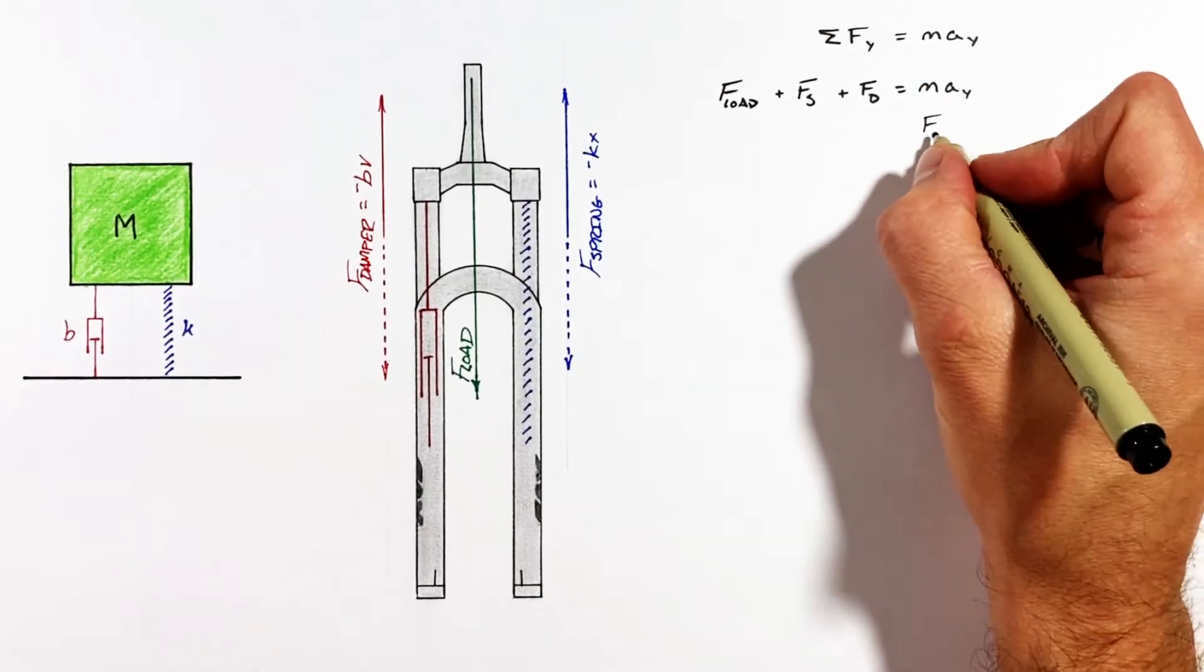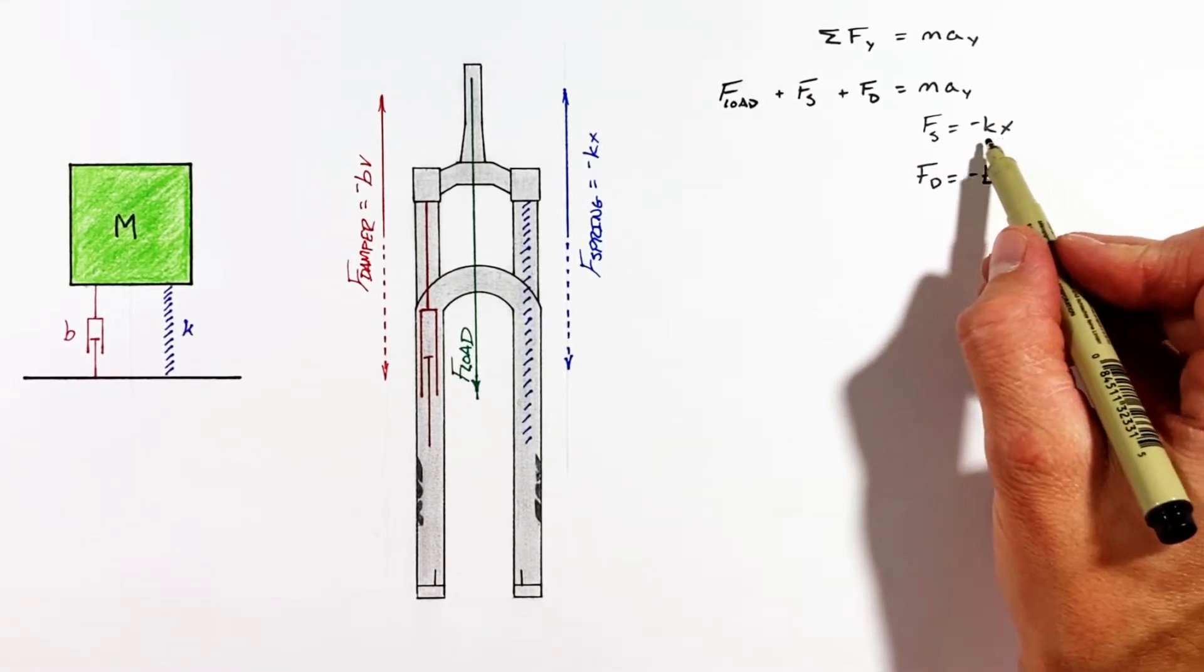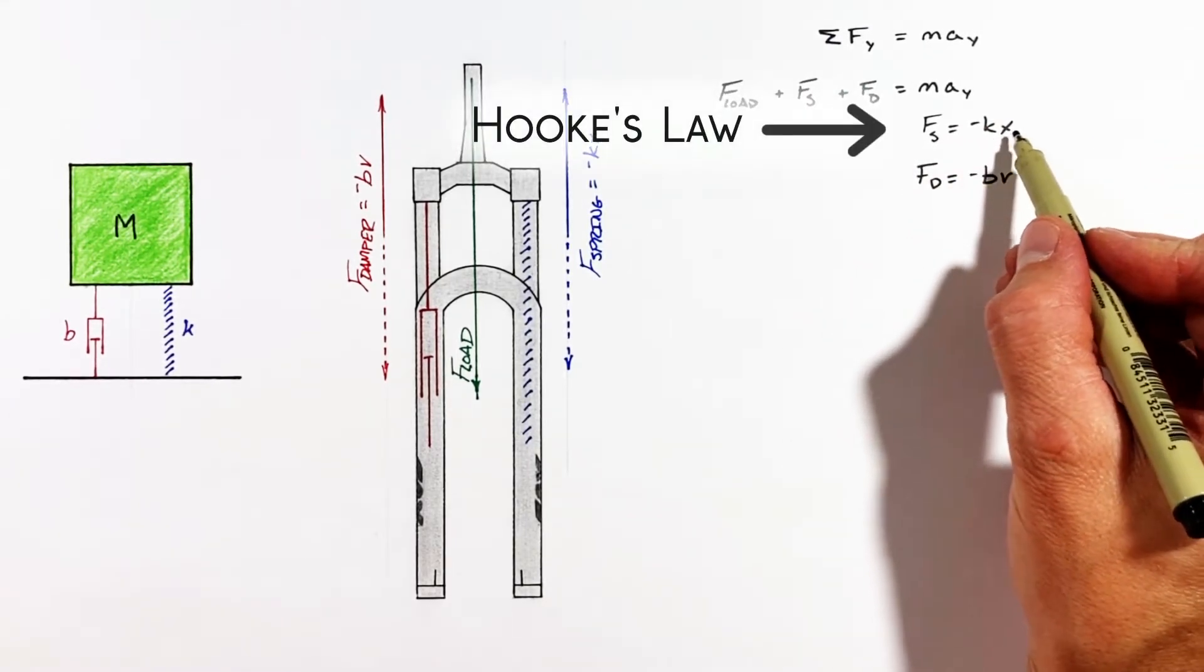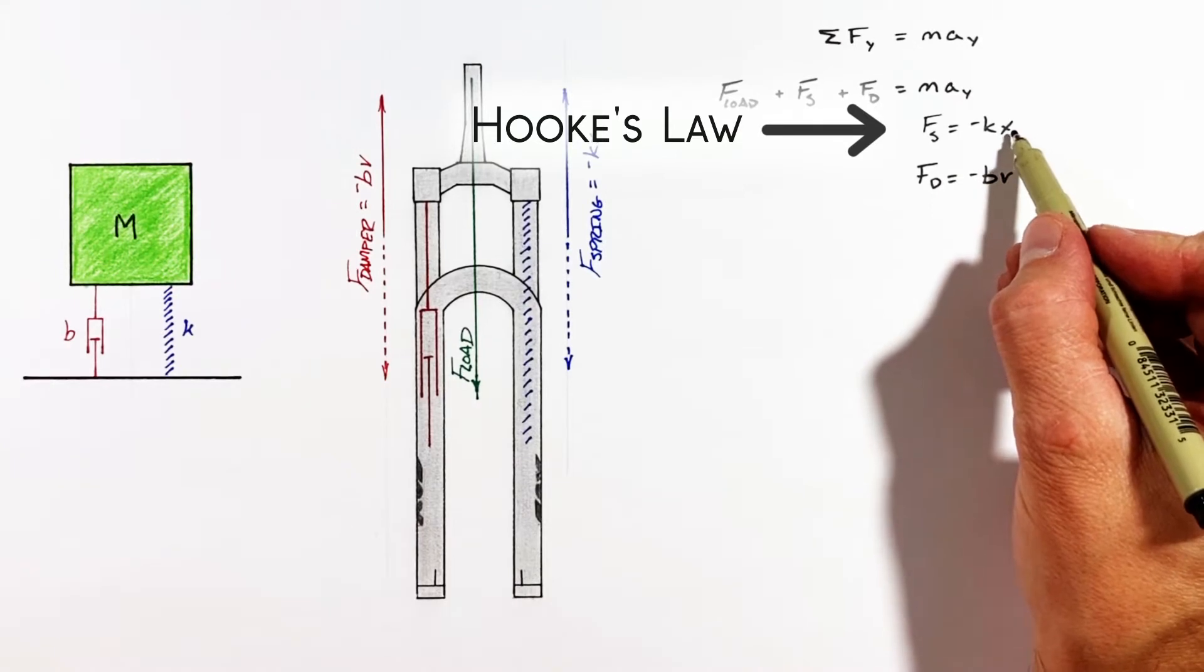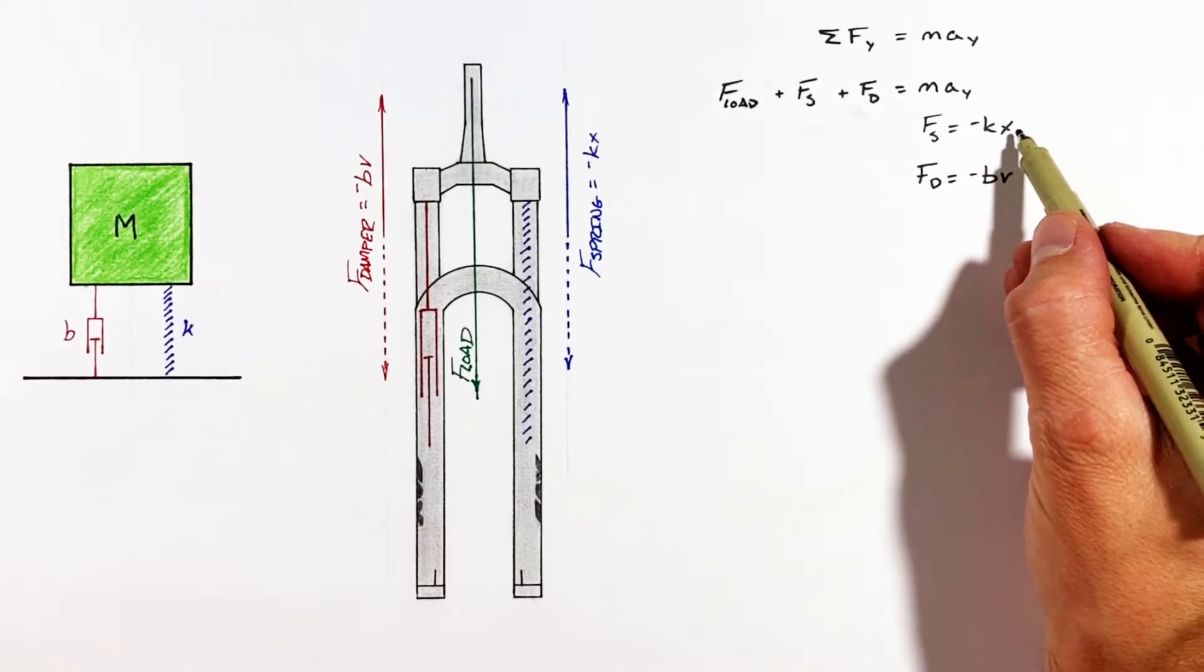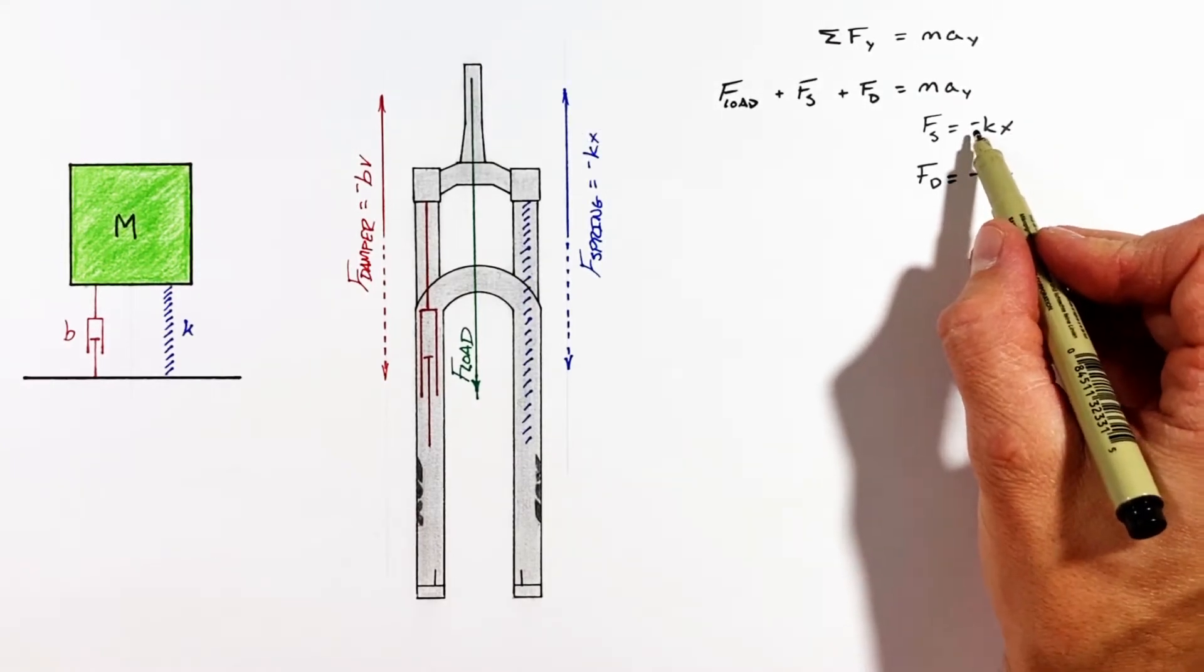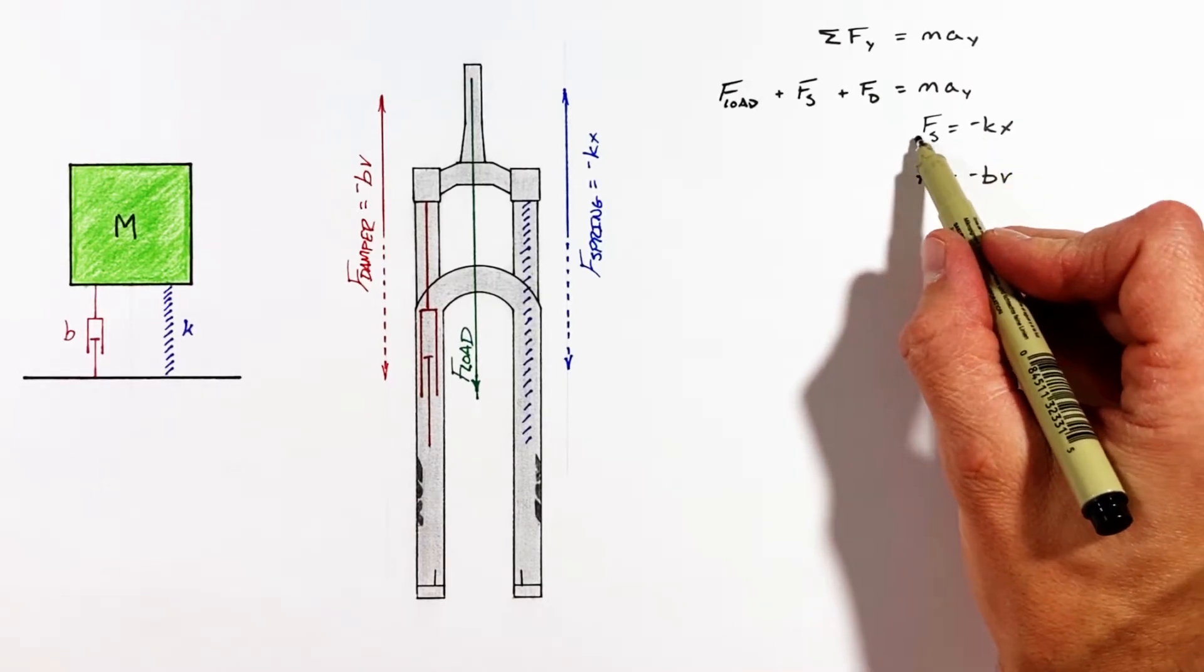The force by the spring is given by K, the spring constant, times X, the displacement of the spring. This negative here is because the force by the spring is always in the opposite direction of the displacement of the spring. So if the spring is pushed down, the force by the spring is up, and vice versa.